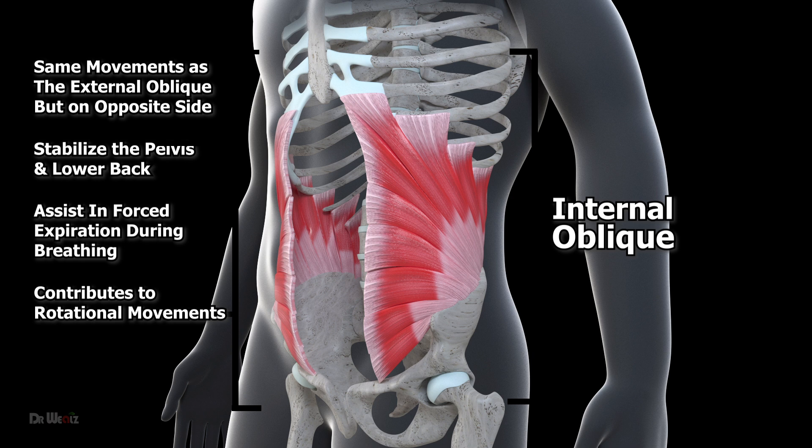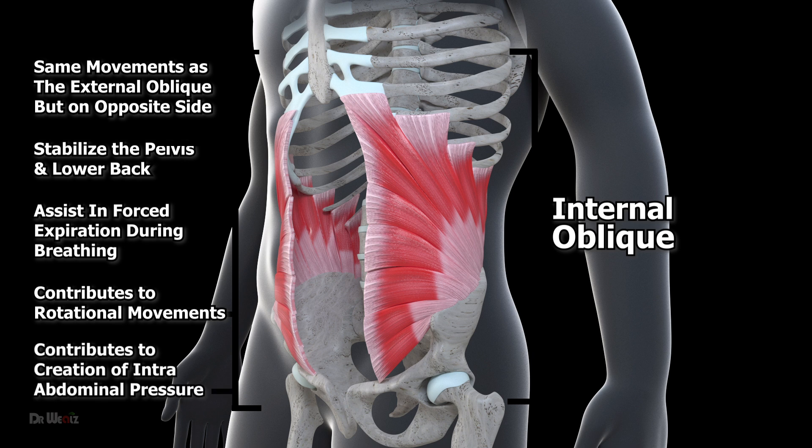In addition to rotational movements, the internal oblique also plays a role in side-bending of the trunk and compressing the abdomen. This muscle, along with the external oblique, contributes to the creation of intra-abdominal pressure, which helps to stabilize the spine and prevent injury.